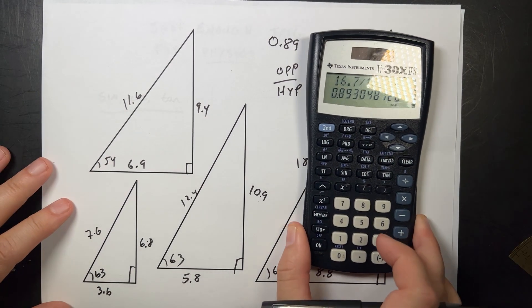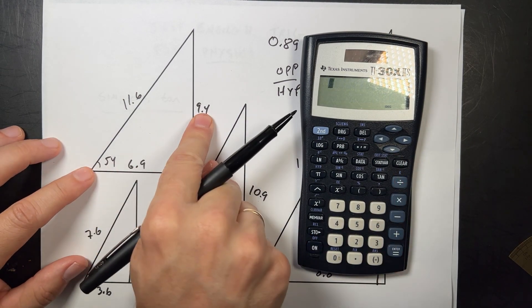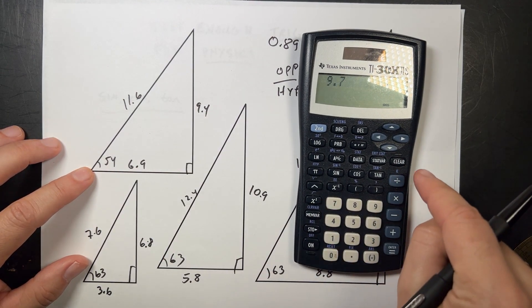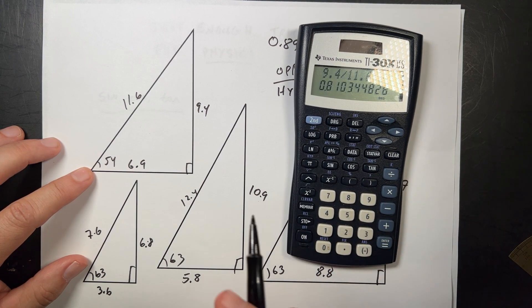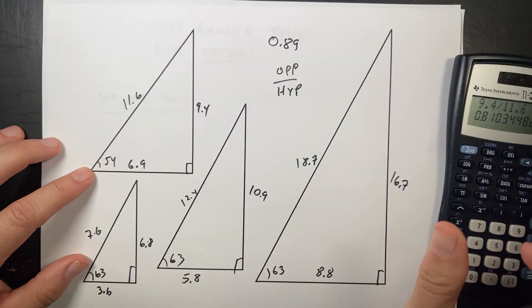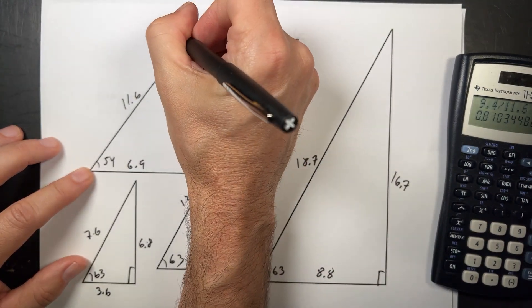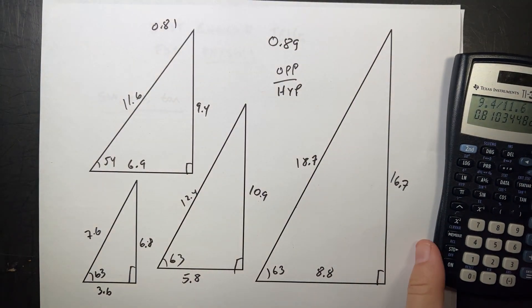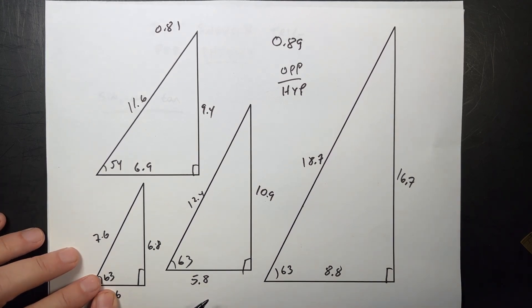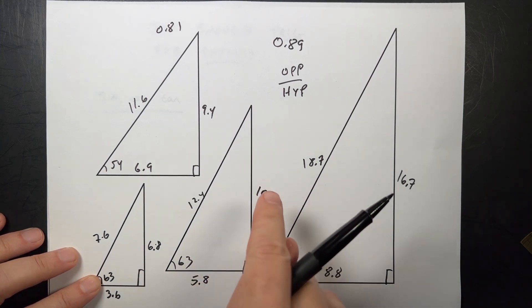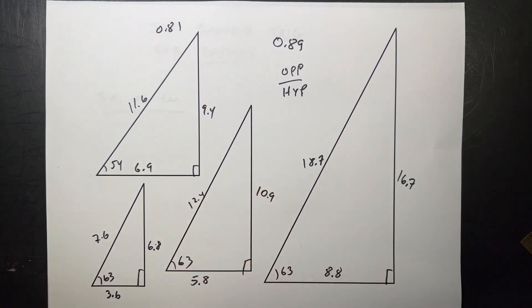Now this one's different. Let's do this one. If I do opposite 9.4 divided by 11.6, I get 0.81. So this one is 0.81. It's different because it's a different triangle. So trig is about these right triangles. It turns out that if I know this angle is the same, then the ratios of opposite over hypotenuse is the same, which is really useful.